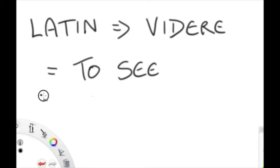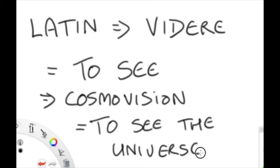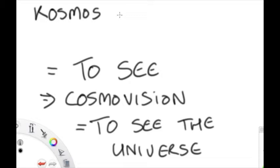In essence, the word cosmovision means to see the universe. It captures how the universe is understood, how it's witnessed, how it's experienced by either an individual, a particular person, or a group of people. They could be the same ethnic group, or it could be the same civilisation or group of civilisations.